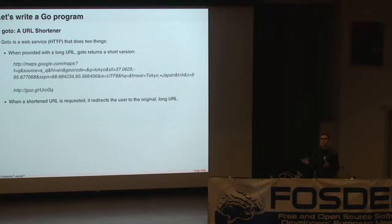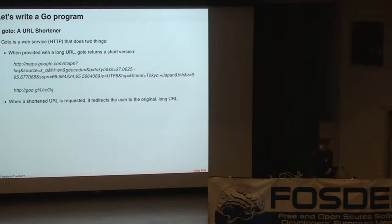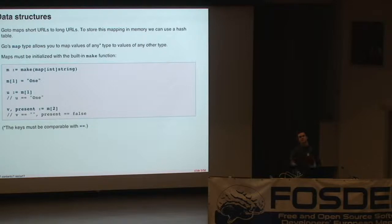The program we're going to write is pretty much the simplest of all possible web applications — a URL shortener. It does two things: as a web service, it takes long URLs and returns shortened versions of those URLs. And when it receives a request to the shortened version, it returns an HTTP redirect to the long URL. The best place to start when writing any program is with the data structures. Our program, GoTo, will store maps of short URLs to long URLs, so the natural data structure to reach for is a hash map.